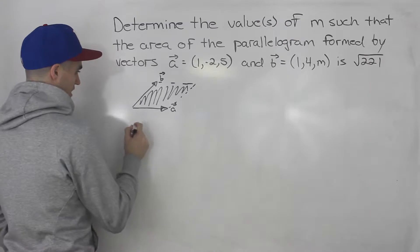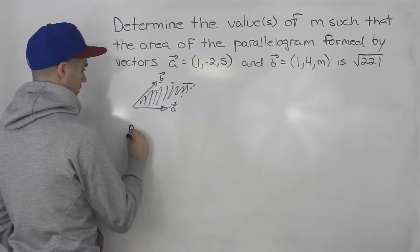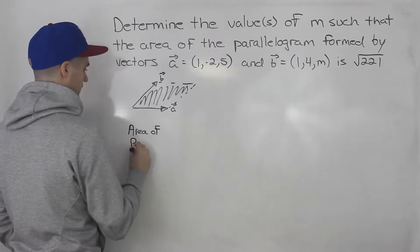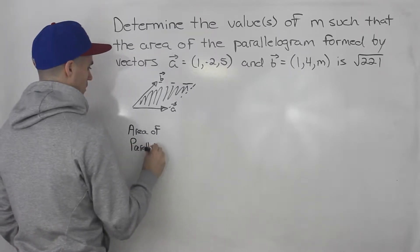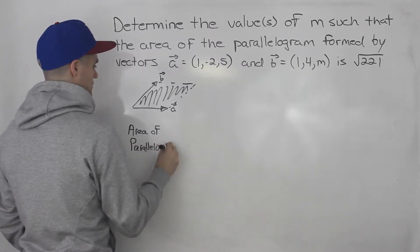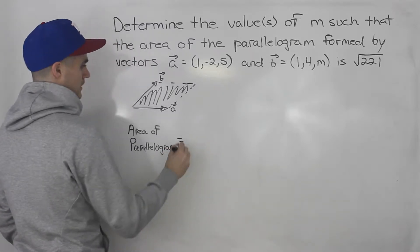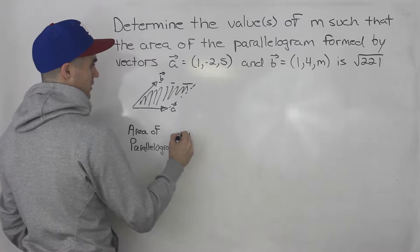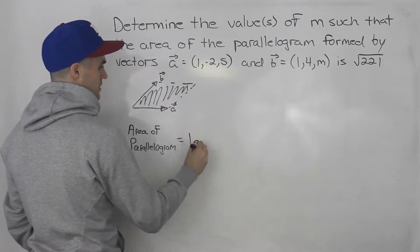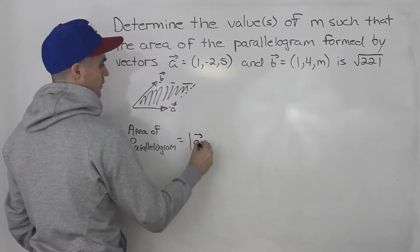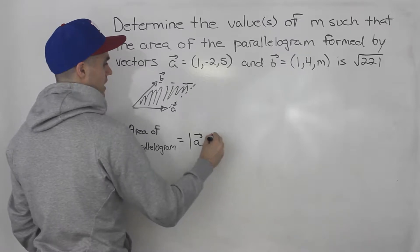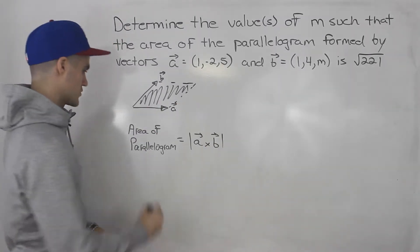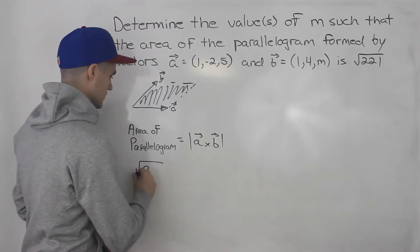Just as a review from the chapter, area of parallelogram formed by two vectors is the magnitude of the cross product between the two vectors. So it's the magnitude of the cross product between vectors a and b. We know the area of the parallelogram is root 221.